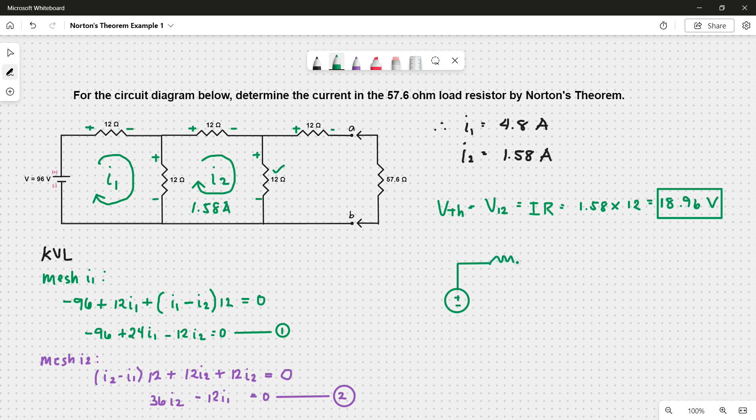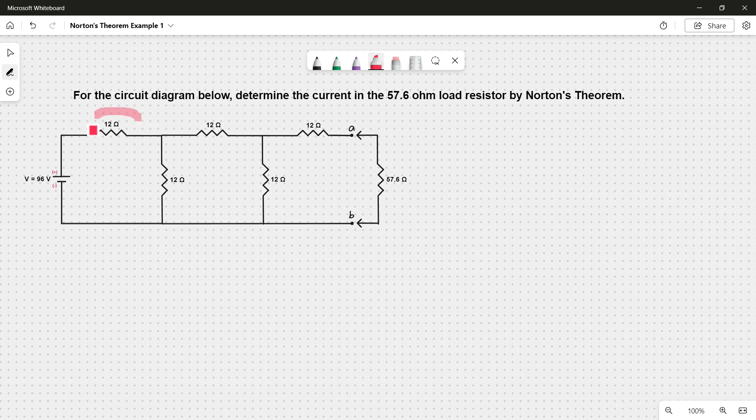Now that we have the thevenin voltage, we have to find the thevenin resistance, or R-thevenin. How? By simply finding the total resistance of this circuit. So let's start off with these two parallel resistors. If we combine them, we will get 6 ohms. Now that they are in series, we add them to get 18 ohms.